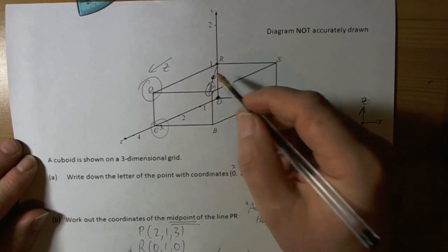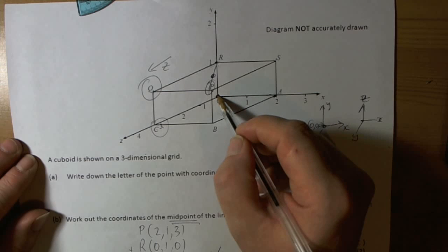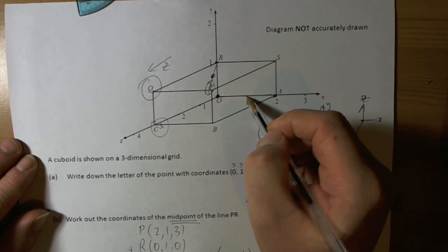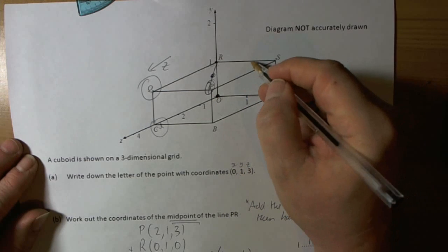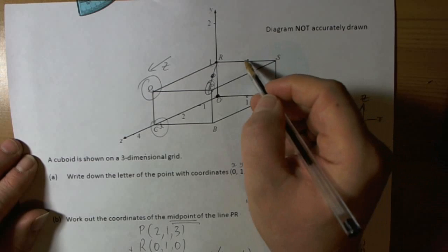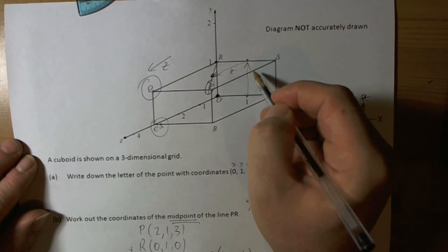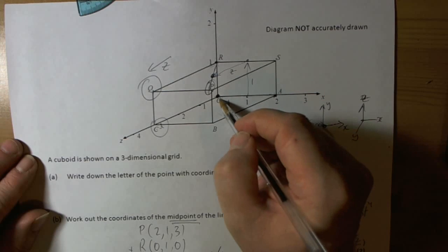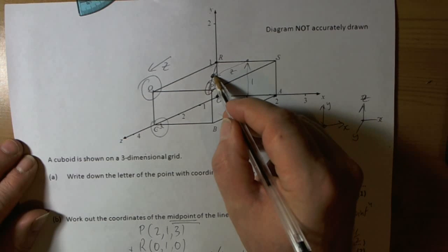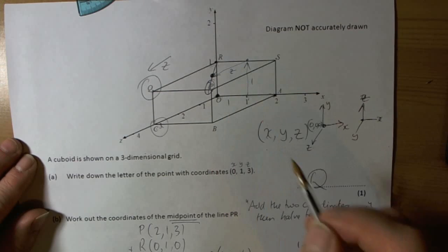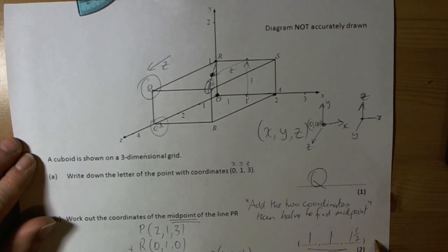Now, we should check that that works. So, the coordinate's telling us to go across to 1, it's telling us to go up to 1, and then it's telling us to come 1.5 along here. So, 1 on the X, 1 on the Y, 1.5 on the Z. So, that seems to confirm that that coordinate is correct.